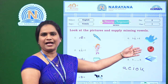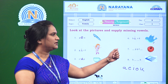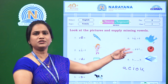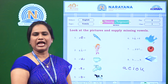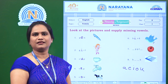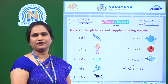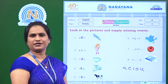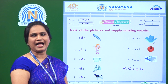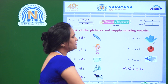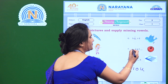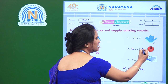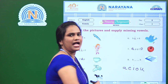The next picture is apple. There are two blanks here. So what is the spelling of apple? A, P, P, L, E — apple. So there are two missing vowels here. Those are A and E. So let us fill in the blanks: A, P, P, L, E — apple.